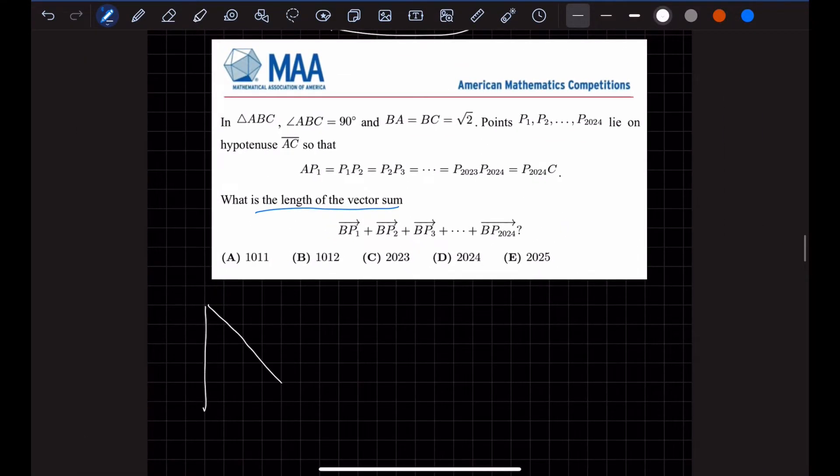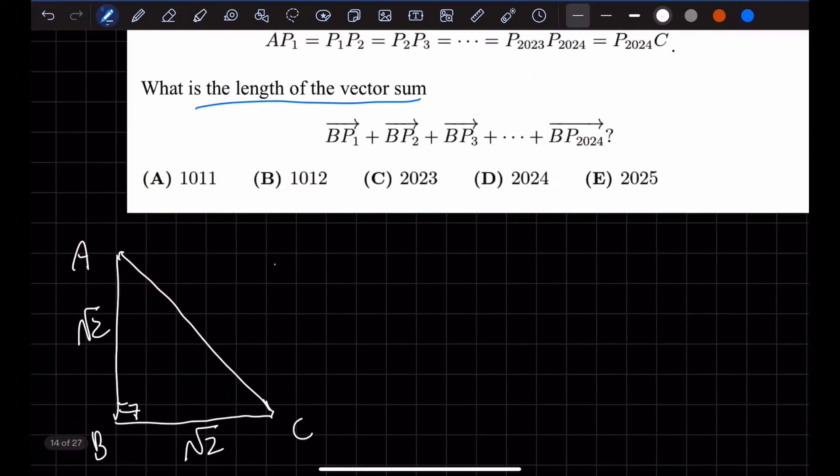We're given a triangle ABC that's a right isosceles triangle. So let's call this ABC. We're given that BA is √2, BC is √2. That means we know the hypotenuse AC would be - A² equals (√2)² plus (√2)², so that's 2 plus 2, which is 4. That means A equals √4, which is 2. So we know that the length of this hypotenuse right here would be 2.